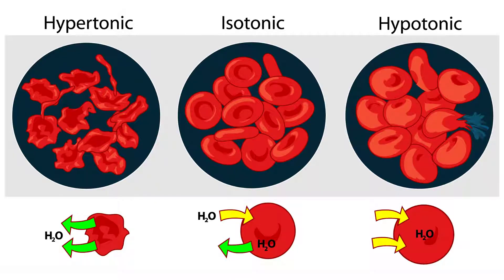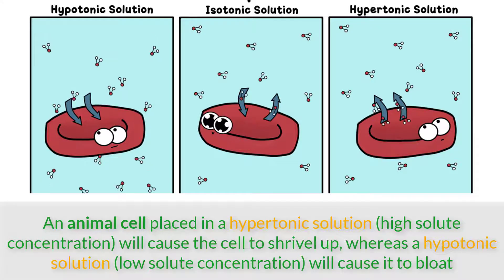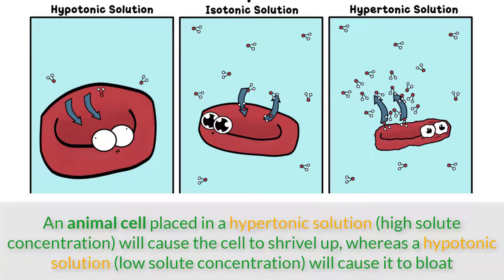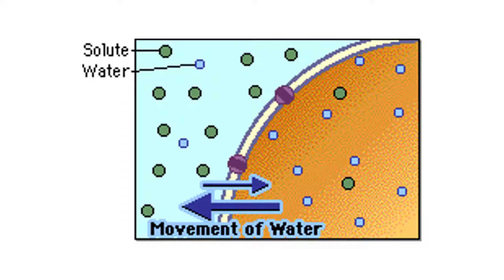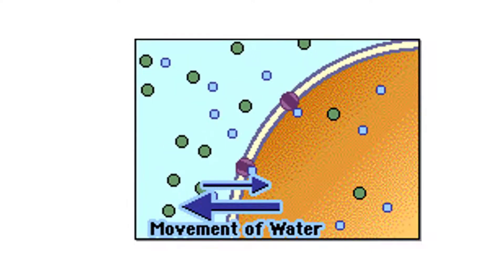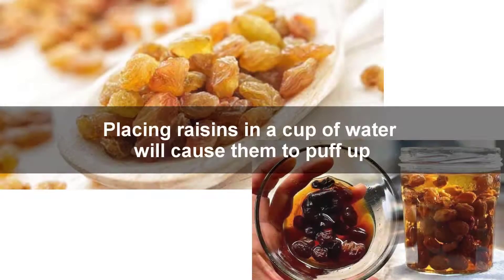There aren't too many examples of semi-permeable membranes that favor only water molecules. But cell membranes, in general, allow water to flow in and out of the cell freely. This is why placing a raisin in a cup of water causes it to puff back up again.